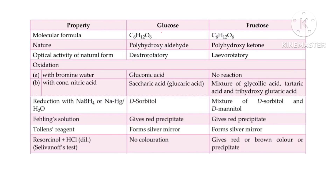Comparing general properties: both glucose and fructose have the same molecular formula C6H12O6. Glucose contains an aldehyde functional group (polyhydroxy aldehyde) while fructose contains a ketonic functional group. Glucose is dextrorotatory (rotates plane polarized light to the right), while fructose is levorotatory (rotates it to the left). With bromine water oxidation, glucose gives gluconic acid while fructose gives no reaction. With nitric acid, glucose gives glucaric acid and fructose gives a mixture of glycolic acid and tartaric acid. Reduction gives sorbitol from glucose, and a mixture of sorbitol and mannitol from fructose.